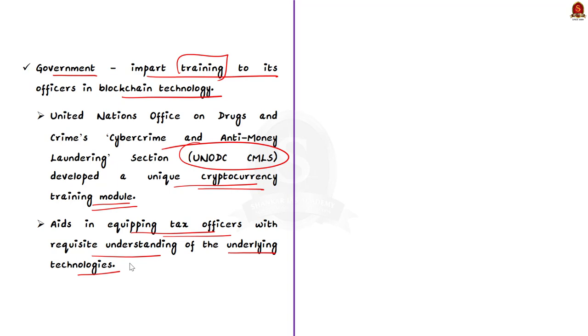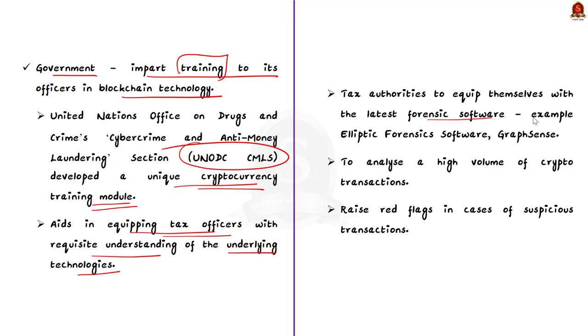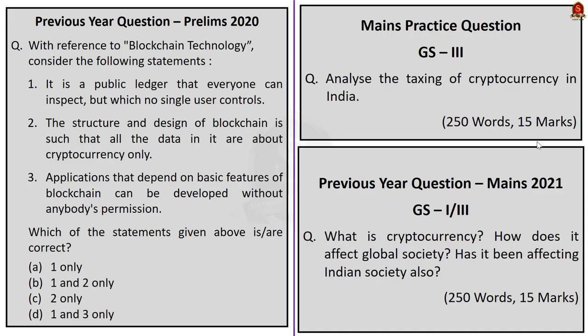Tax authorities should also equip themselves with the latest forensic software which can analyze a high volume of crypto transactions at a time and raise red flags in case of suspicious transactions. For example, Elliptic forensic software is being used by the USA Internal Revenue Service and GraphSense is used by the European Union. According to the author, cryptocurrencies are here to stay, and therefore a streamlined tax regime will be essential in the formulation of a clear, constructive and adaptive regulatory environment for cryptocurrencies. These points can be used to enhance your mains answers.